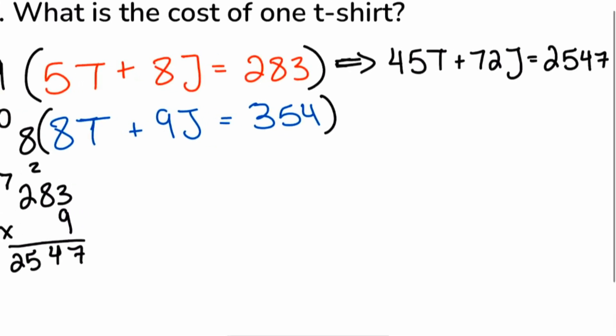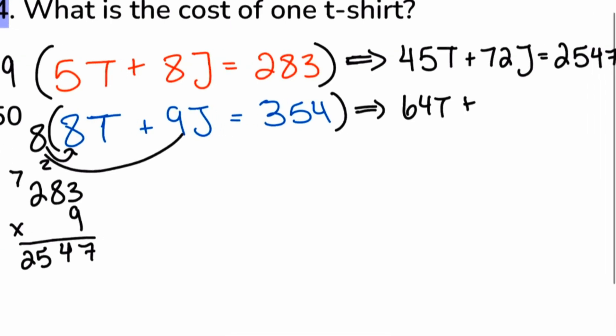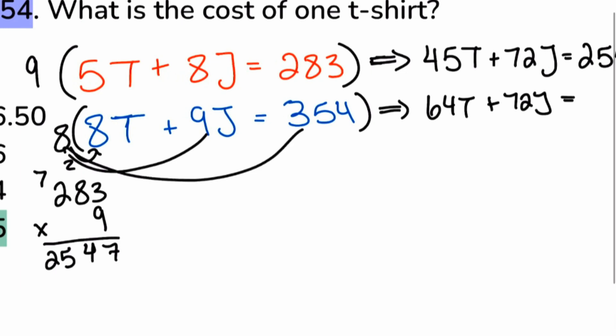And notice how we can stay calm throughout this whole process. 8 multiplied by 8, that'll be 64T. Then we have 8 times 9, that'll be 72J. And then after that, we have 8 multiplied by 354. So we'll perform that right over here.